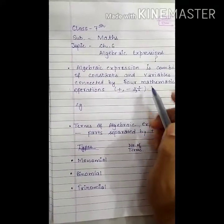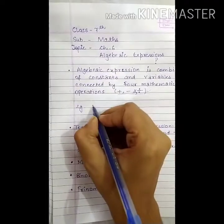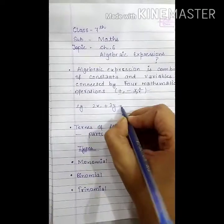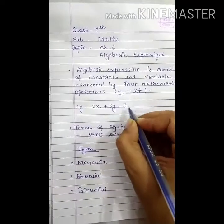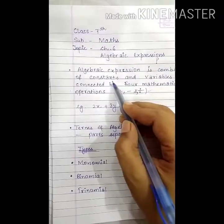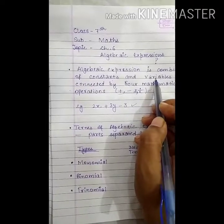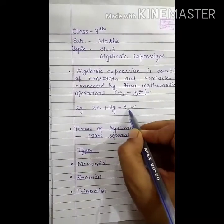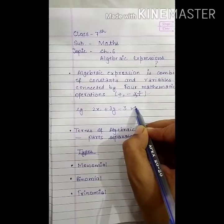For example, 2x + 3y - 3. This is a combination of constants and variables connected by plus and minus. So, this is an algebraic expression.